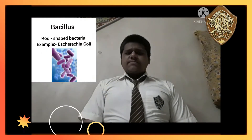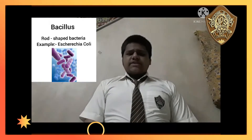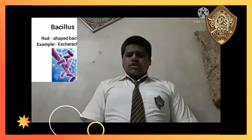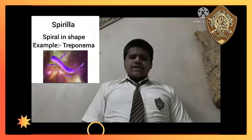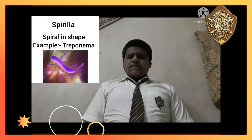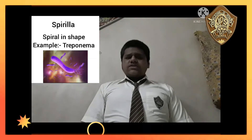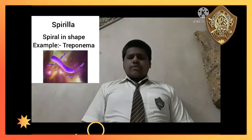The second type of bacteria is Bacillus. They are rod-shaped bacteria. For example, Escherichia coli. The third type of bacteria is called Spirilla. They are spiral in shape. For example, Treponema.